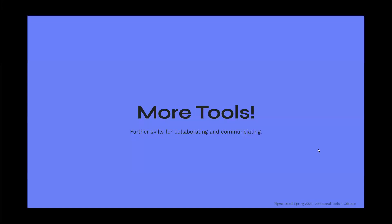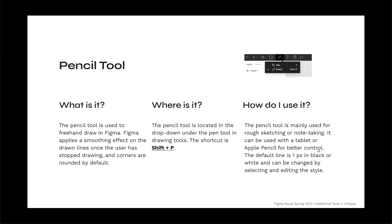More tools — further skills for collaborating and communicating. The pencil tool is used to freehand draw in Figma. Figma applies a smoothing effect on the drawn lines once the user has stopped drawing, and the corners are rounded by default. It's located in the dropdown under the drawing tools, and the shortcut is Shift+P.